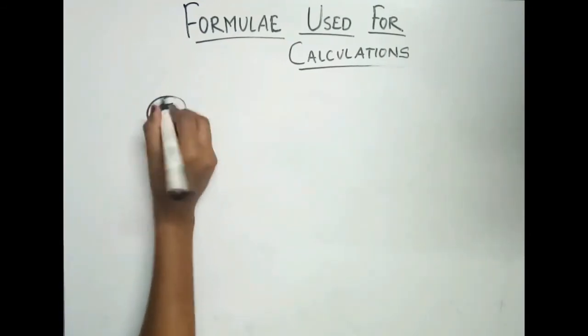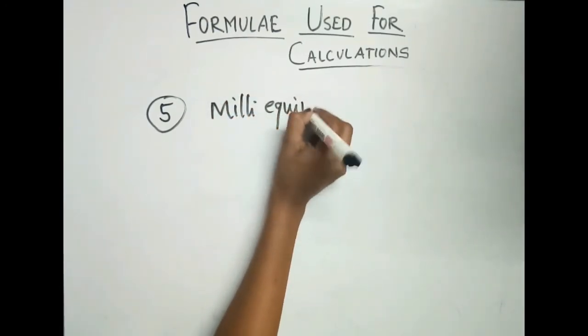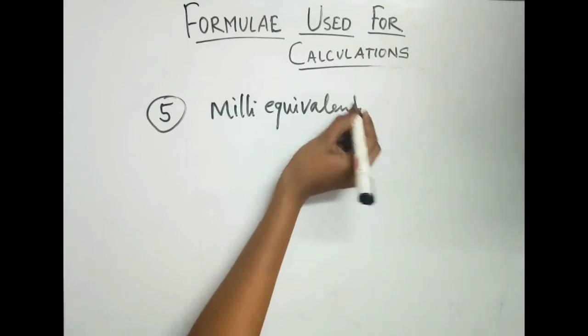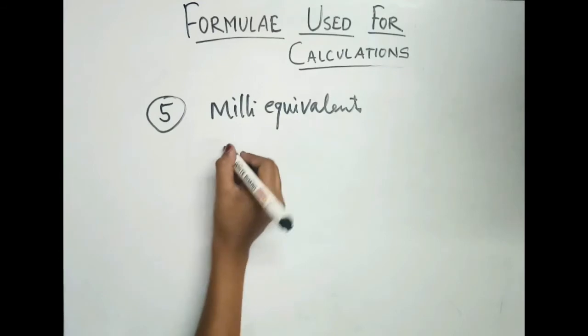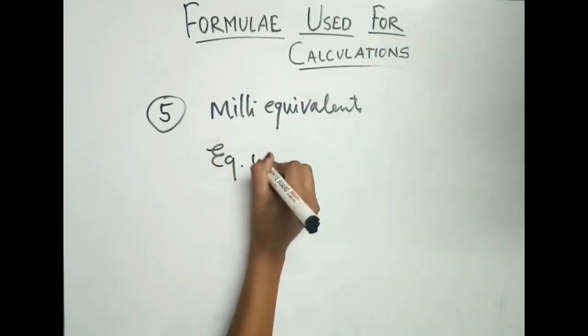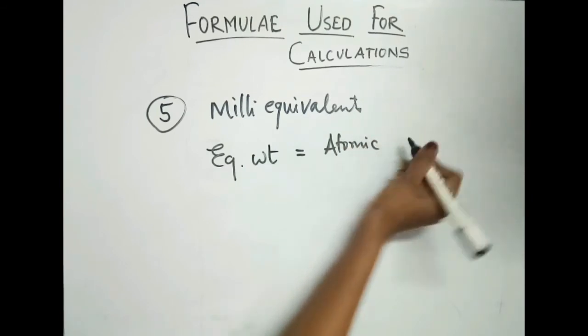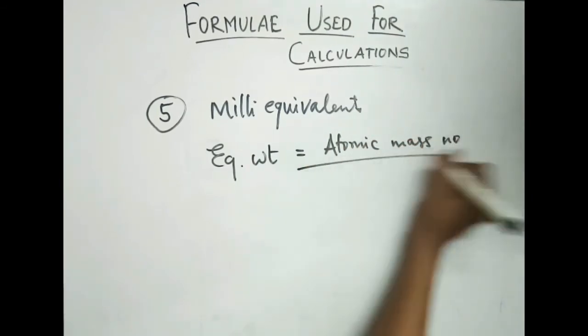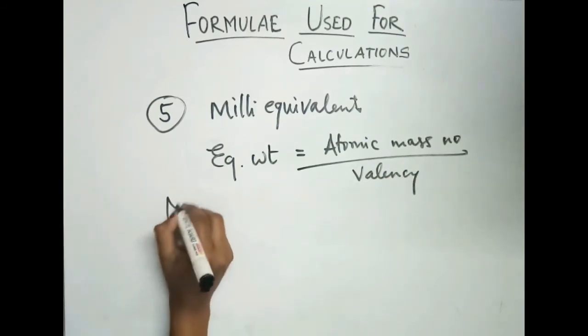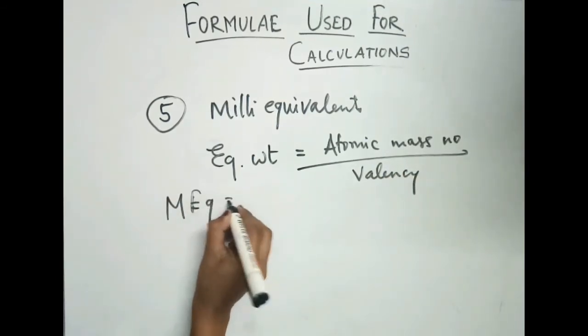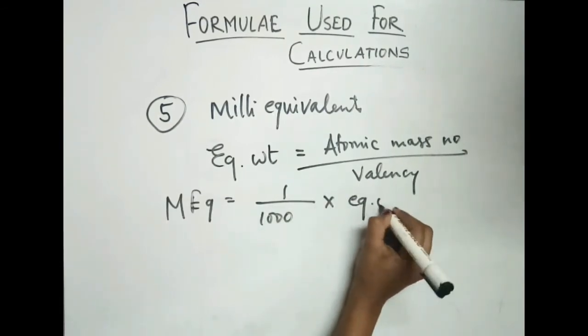Fifth formula is for calculating milliequivalent. First, equivalent weight equals atomic mass number upon valency. Milliequivalent equals 1000 times equivalent weight.